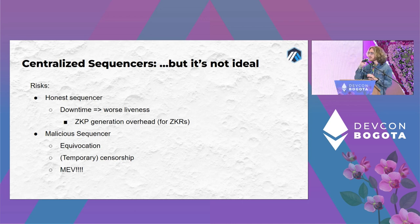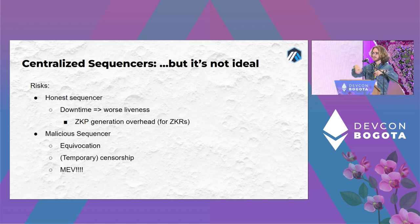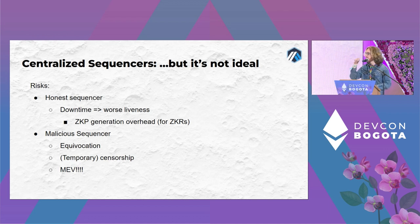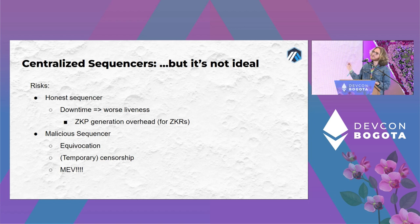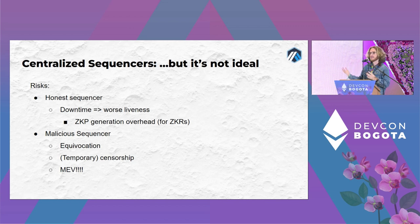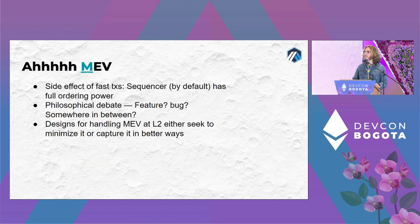Having a centralized sequencer is obviously not ideal. Even an honest sequencer could have downtime due to infrastructure failures and server issues, slowing the whole system down. If the sequencer is actually malicious, it can equivocate — make a promise and not make good on it, or make inconsistent promises to different users. It can technically temporarily censor you: if it stops processing your transaction, you'll eventually get it through, but you might have to wait hours, which could be a real problem.